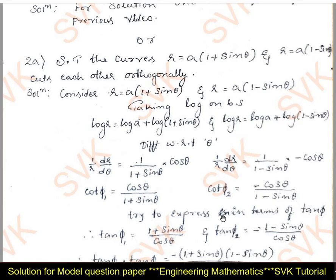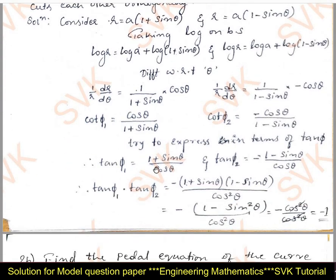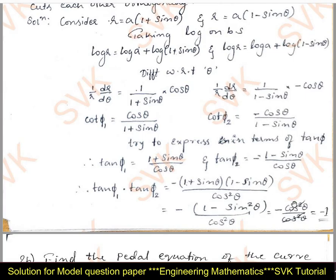Expressing in terms of tan: tan φ₁ = (1 + sin θ)/cos θ and tan φ₂ = −(1 − sin θ)/cos θ. Therefore, tan φ₁·tan φ₂ = −(1 + sin θ)(1 − sin θ)/cos²θ = −(1 − sin²θ)/cos²θ = −cos²θ/cos²θ = −1. So tan φ₁·tan φ₂ = −1.